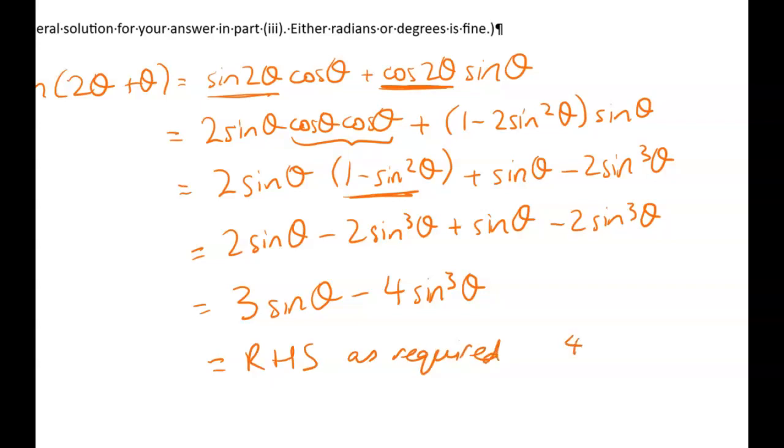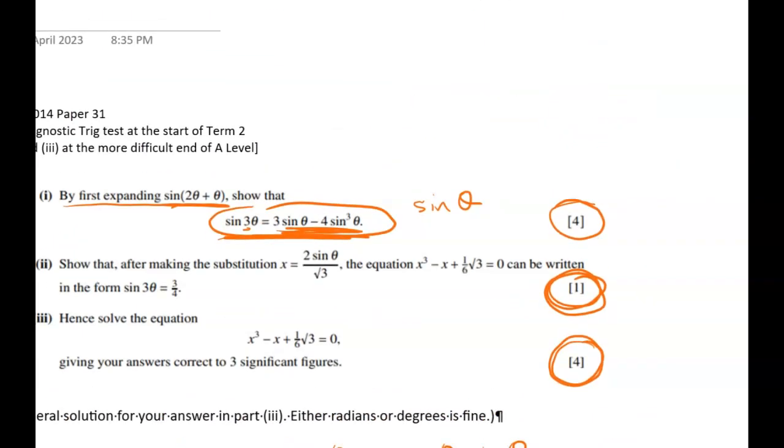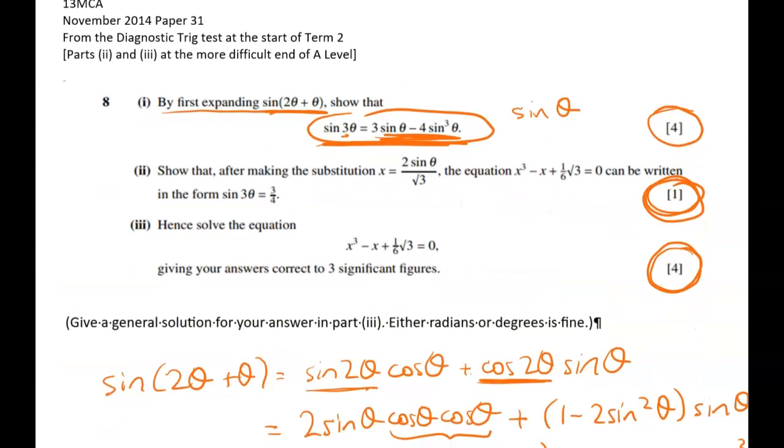Okay so hopefully that felt like four pretty easy marks. If you've got issues with your compound angles, your double angles, or your Pythagoras identity, go and do some work in chapter three of the textbook or the work out of the old delta textbook. I think it's chapter 34. Okay so that was the first four marks and now we're again guided with what to do.